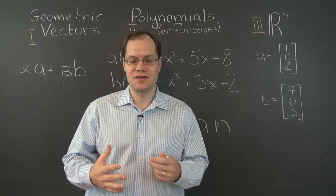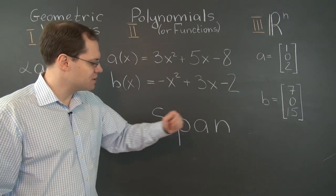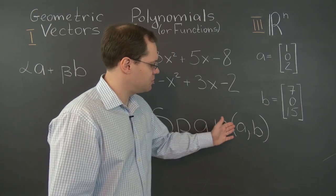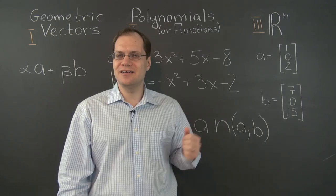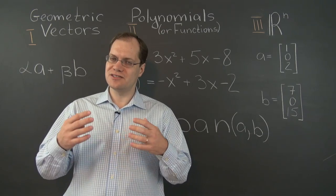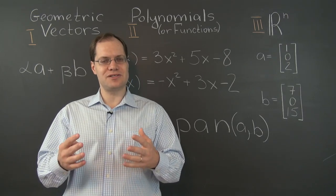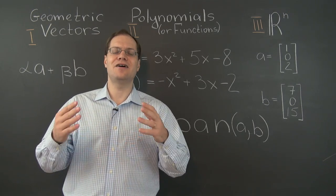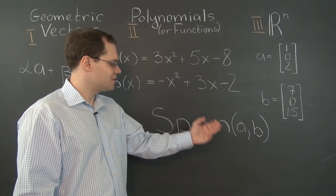That subset of vectors is called the span of a and b, written as span(a, b). If we had more vectors, we would just put all of them in parentheses. Span is a very nice word — we no longer have to say 'the set of all possible linear combinations,' we can just say span. Just as linear combinations replaced 'sums and products with numbers,' now instead of saying 'all possible linear combinations,' we can simply say span.